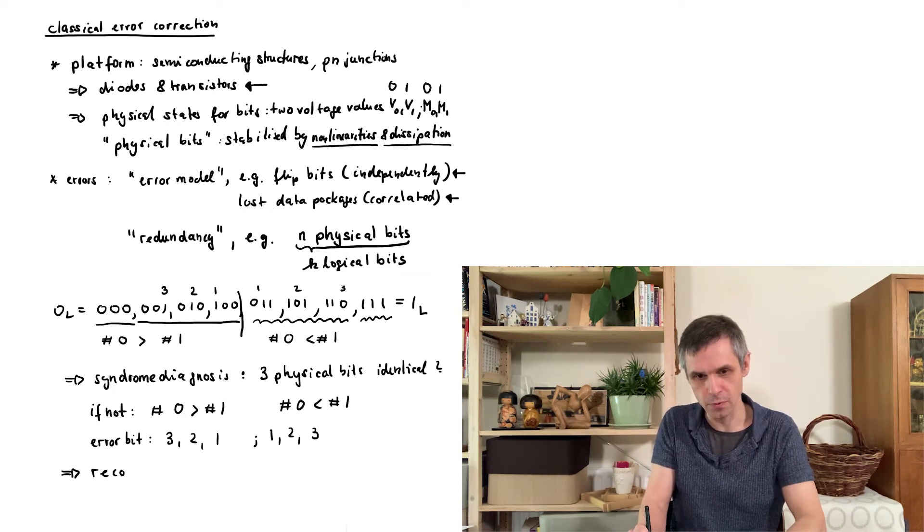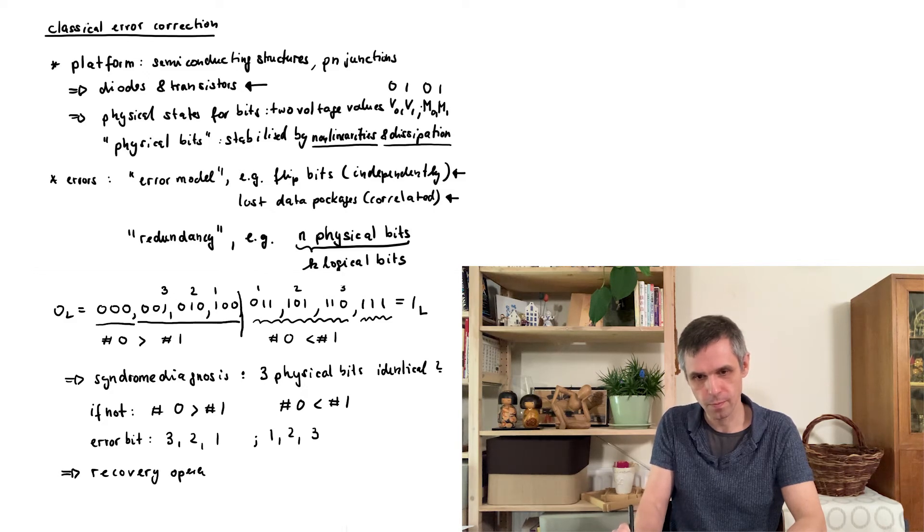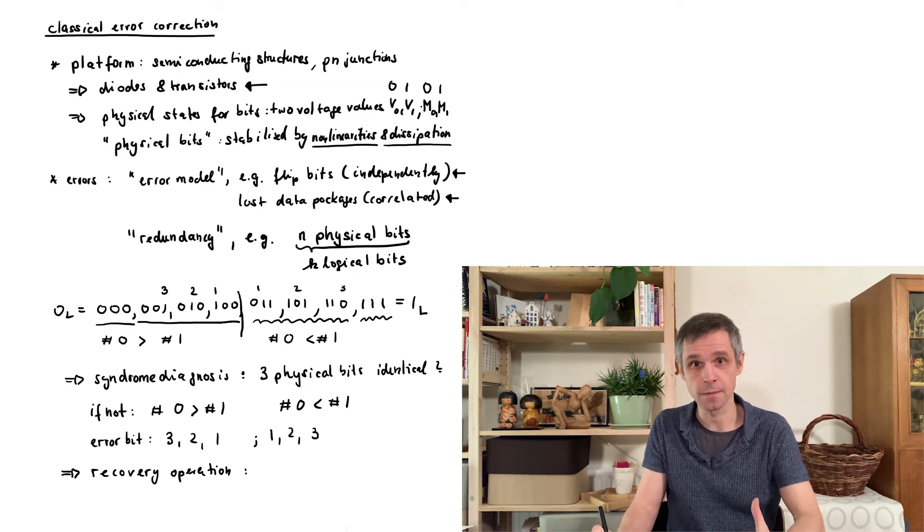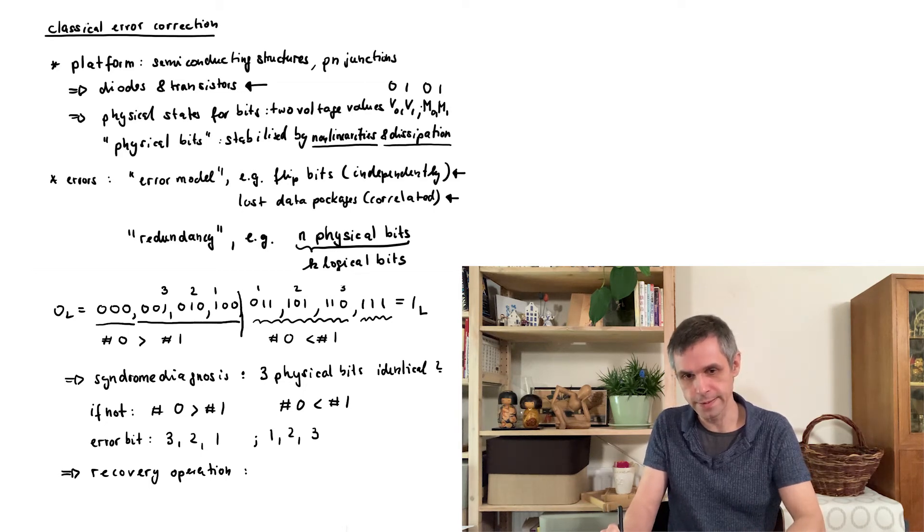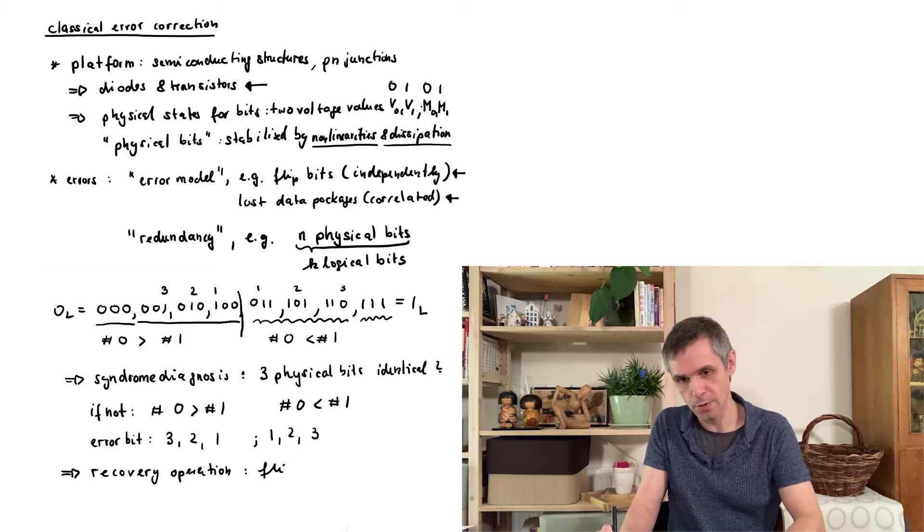And this is everything that we need to correct for this error in the so-called recovery operation, where we here simply change the state of the physical bit that is erroneous. So we flip the error bit.